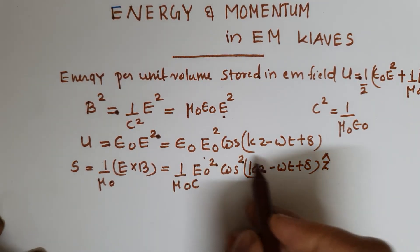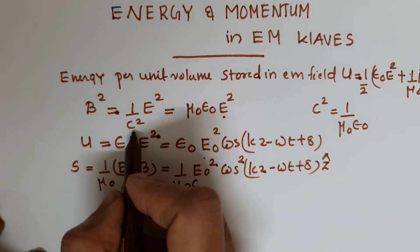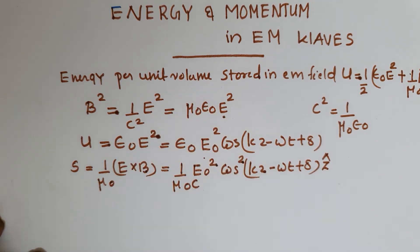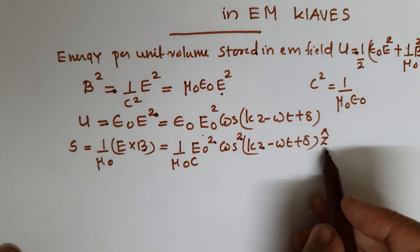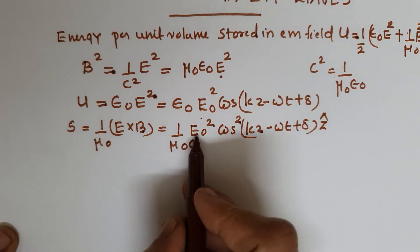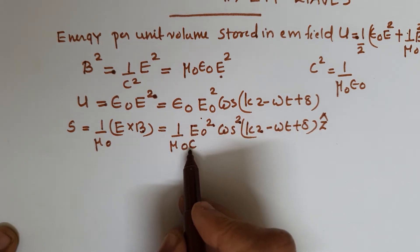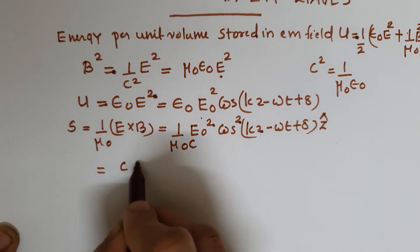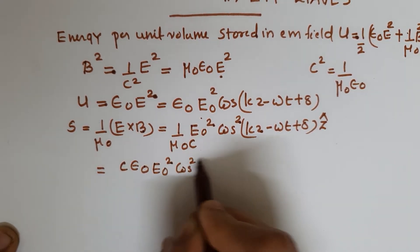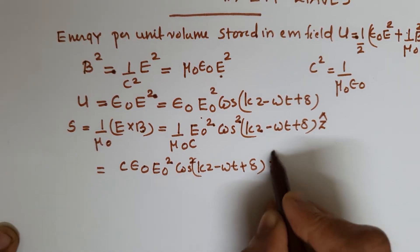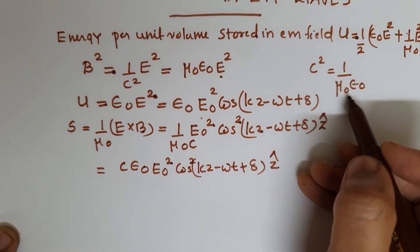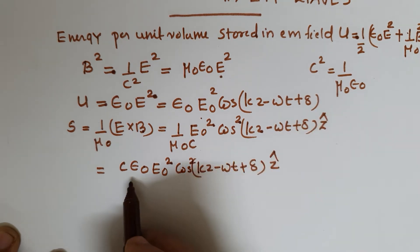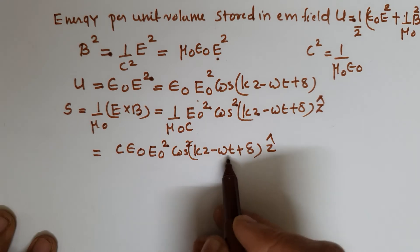Since B = E/c, we can write the Poynting vector as (1/μ₀c)E₀² cos²(kz − ωt + δ) ẑ. Multiplying and dividing by c, and substituting c² = 1/(μ₀ε₀), the μ₀ cancels and we get S = cε₀E₀² cos²(kz − ωt + δ) ẑ for a plane monochromatic wave traveling in the z direction.